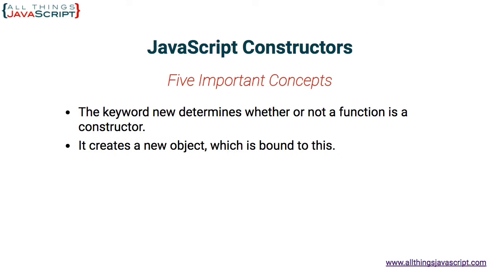Second, a constructor creates a new object, and that object is bound to this. When we use this inside the function that is the constructor, it refers to that new object that is created. The keyword new causes that new object to be created.